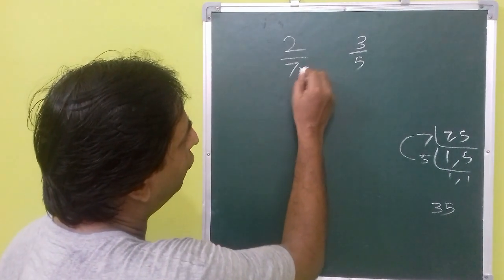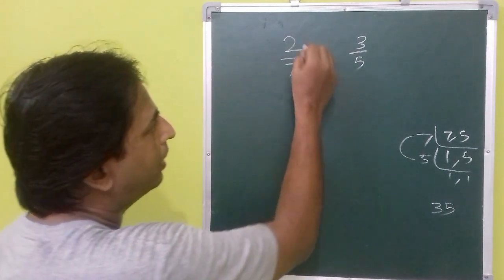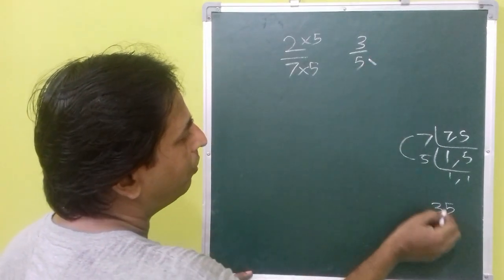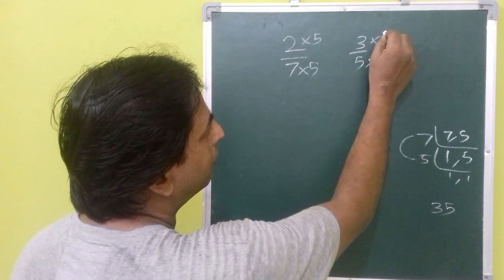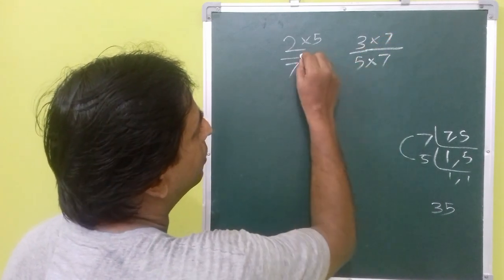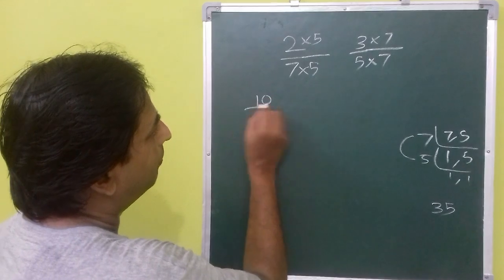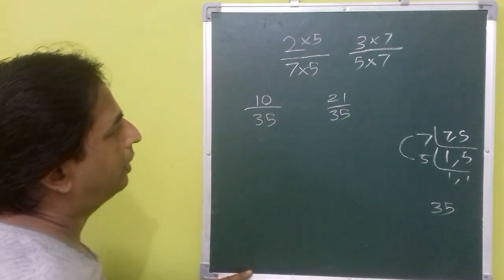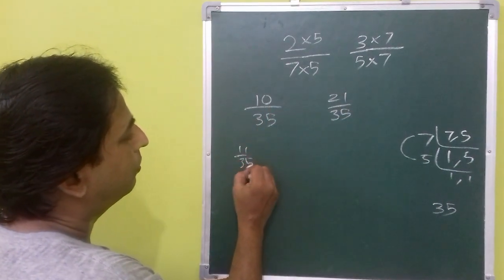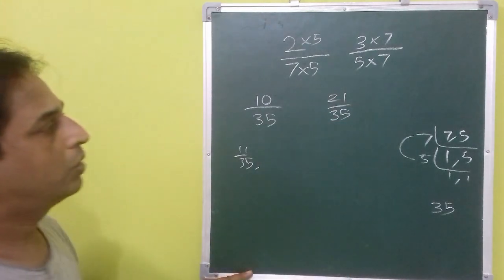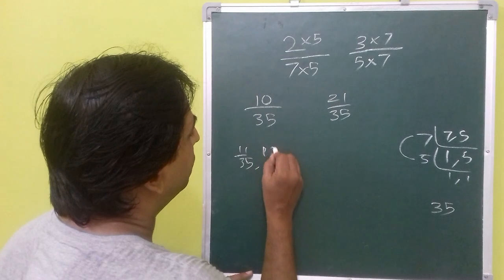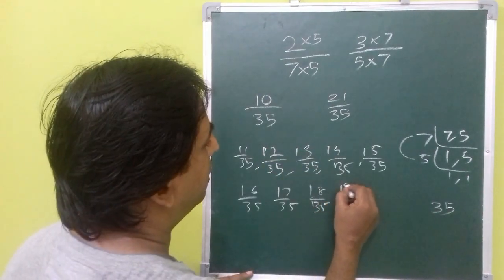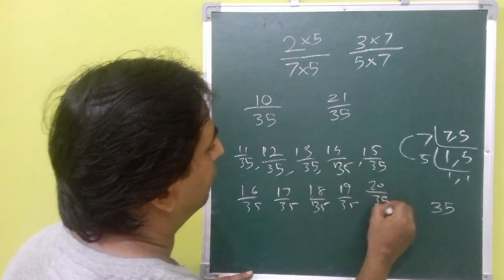To make the denominator 35, multiply 2/7 by five on both numerator and denominator, and multiply 3/5 by seven on both numerator and denominator. This gives 10/35 and 21/35. You can then directly list 11/35, 12/35, 13/35, up to 19/35 and 20/35 — that gives you ten rational numbers.